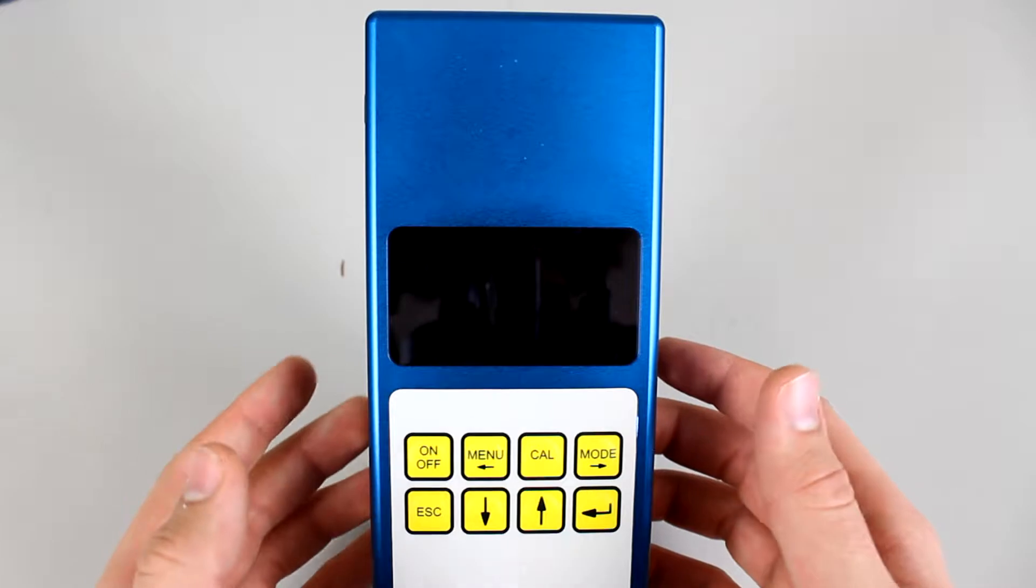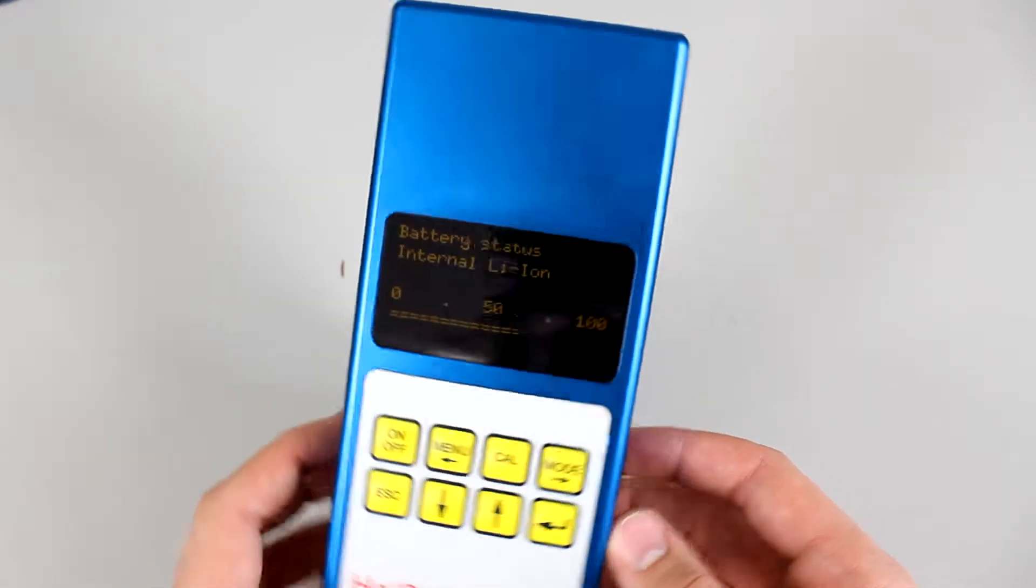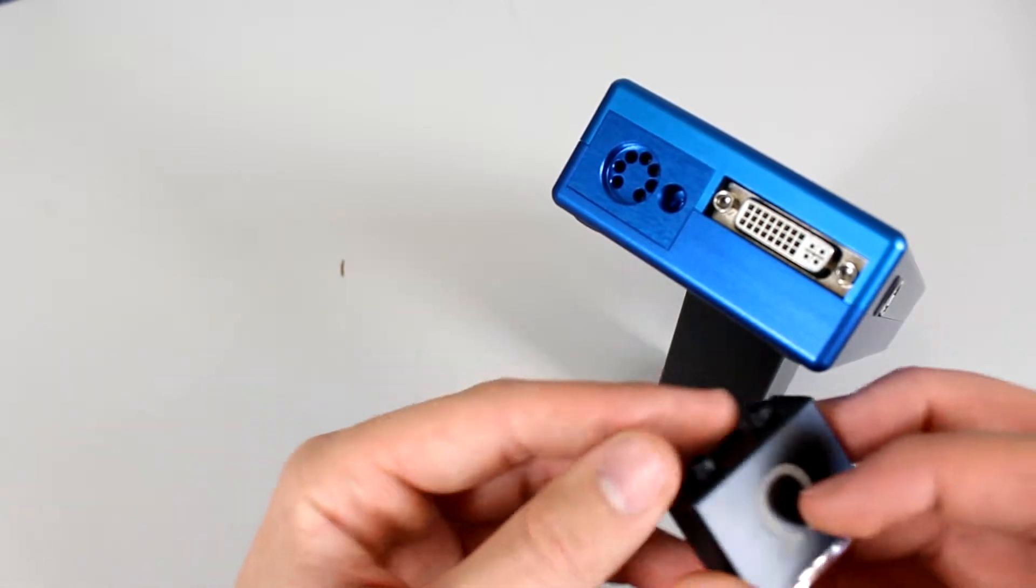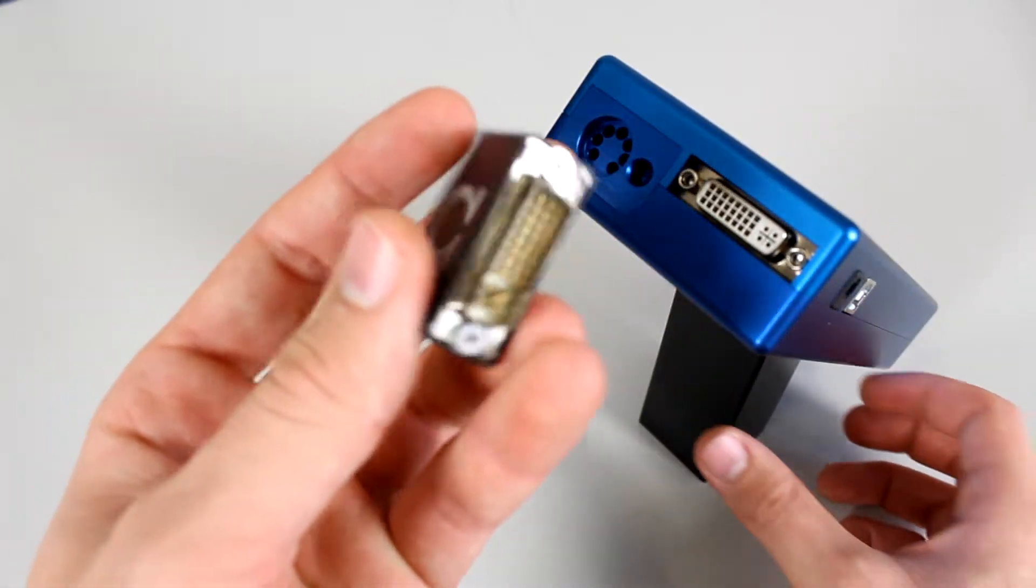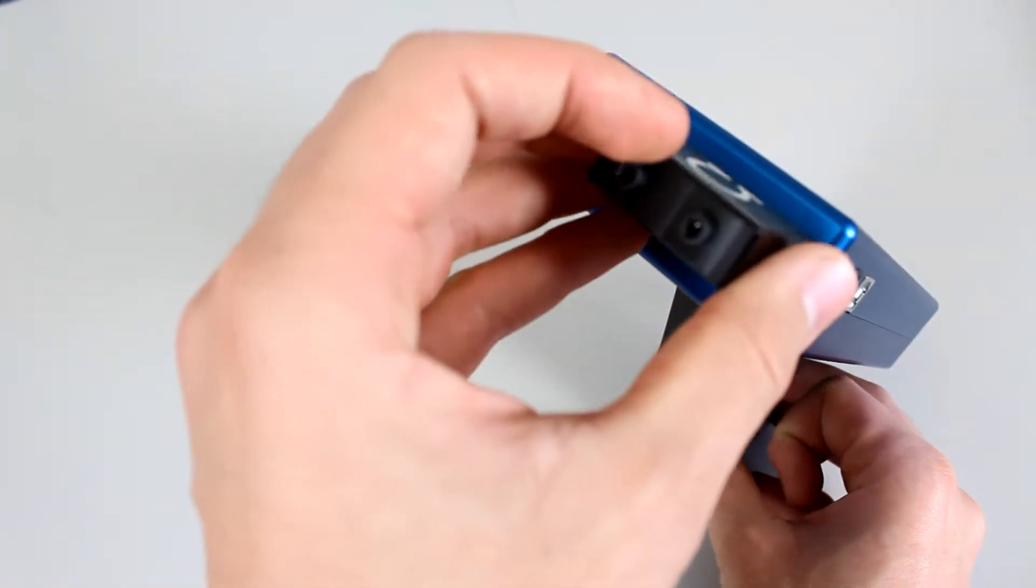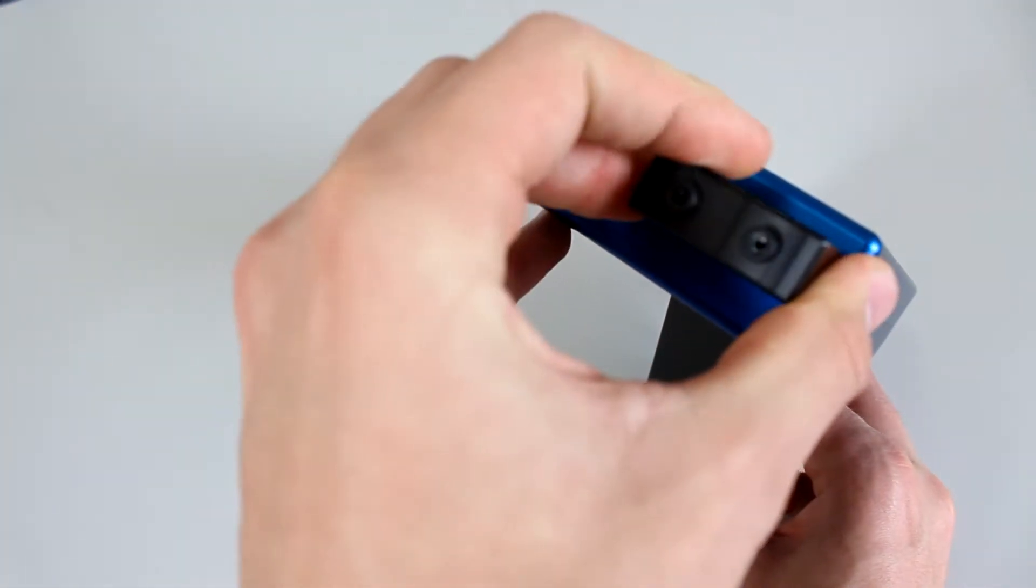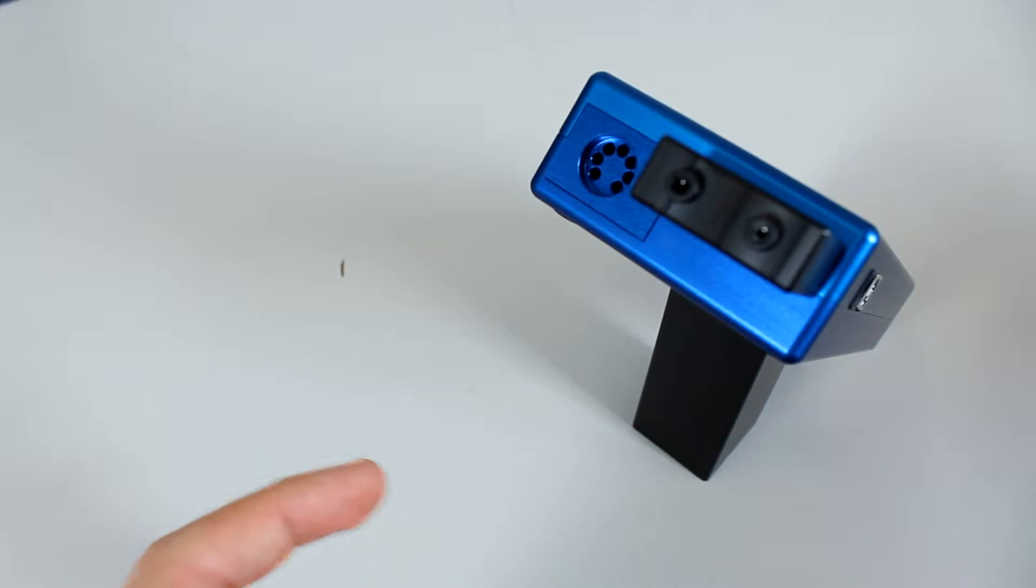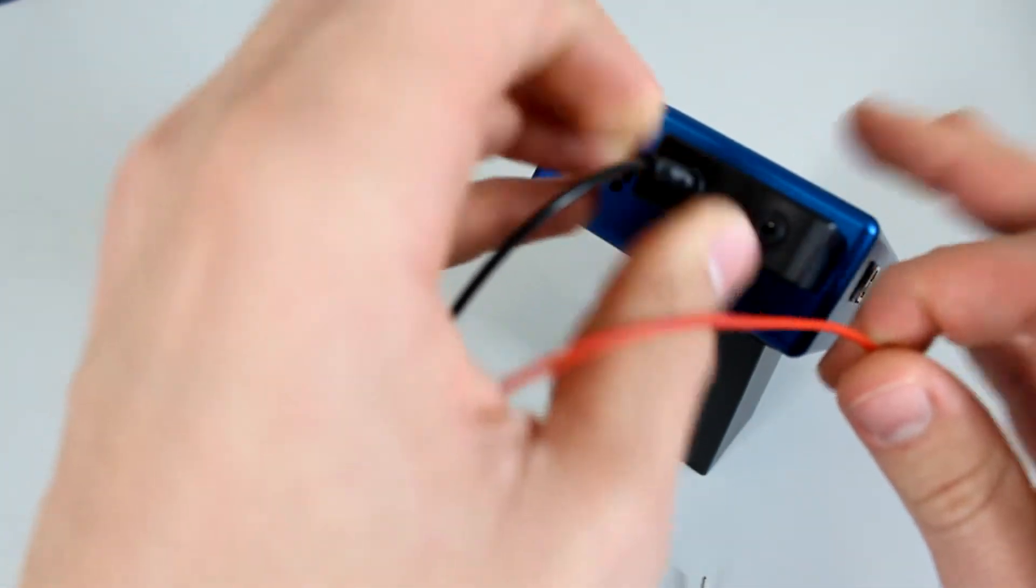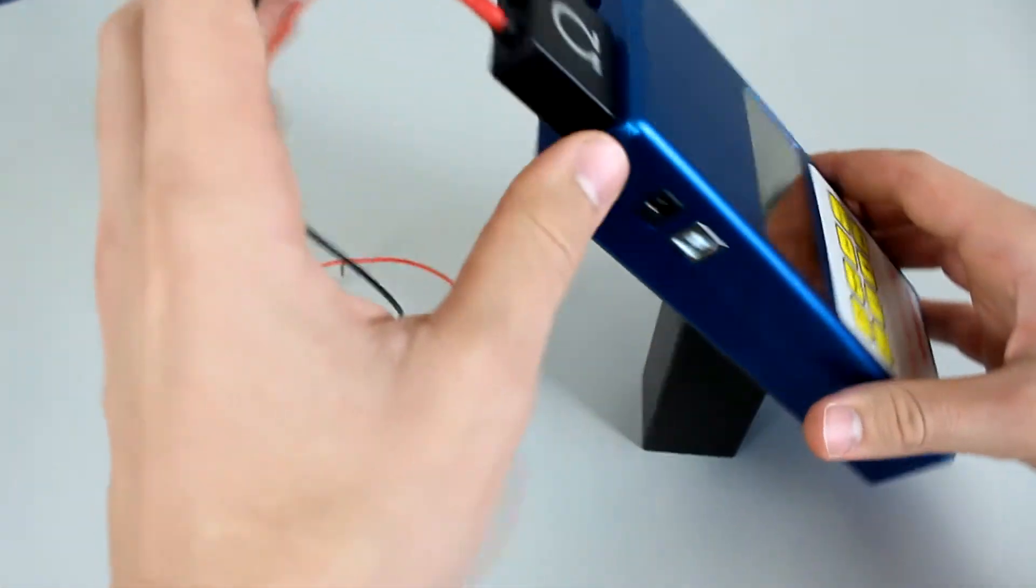You want to start your analyzer and then you connect the ohmmeter to it. Then you want to take your cables and connect them up to your device like so. And now you can start measuring.